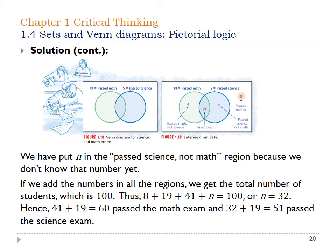So we have 41 who passed math but not science, and 19 who passed both. To figure out the past-science-only group, we take all known values away from 100 — that gives us 32 people who passed science but not math. From this, we can also figure out that 41 plus 19 equals 60 people passed the math exam, and 19 plus 32 equals 51 people passed the science exam.